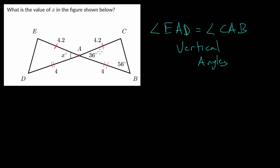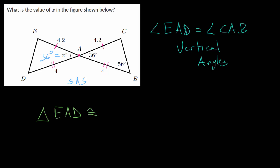We can write that angle EAD is equal to angle CAB because these are vertical angles, and since they're equal, we now know that x is just 36 degrees. From here, we can also prove that these two triangles are congruent to each other since we have side-angle-side for each of these triangles, which is one of our congruence postulates.